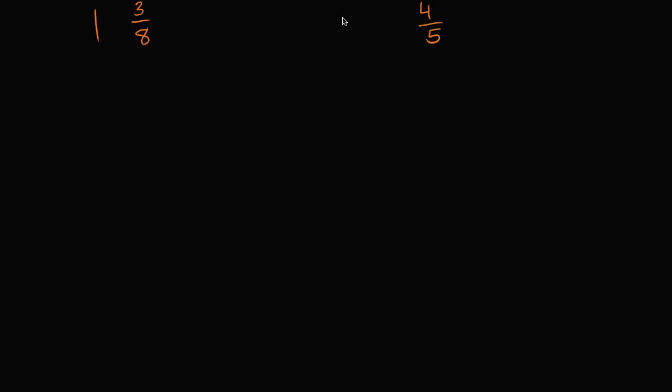Let's do that again. Let's do one where we have to regroup again. And I'll just write it out in a column to begin with. Let's say that we have 7 and 1 sixth minus 4 and 5 sixths.